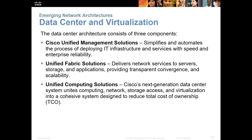There is also a fabric, which is what delivers the network services — servers and storage applications. Basically the fabric, which is what we've been discussing in our classes as a switching fabric, is the connection between our important devices. There's also a unified computing solution, which is Cisco's next-generation data center system. It will unite computing, network, storage, and virtualization collectively and cohesively, so that we can have a lower-cost solution for data center environments — basically reducing our TCO, or Total Cost of Ownership.